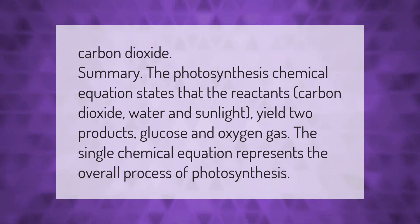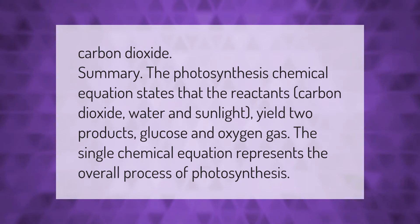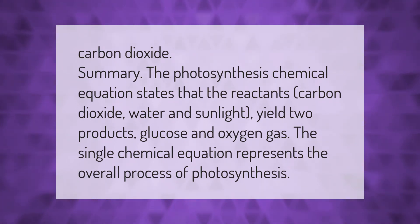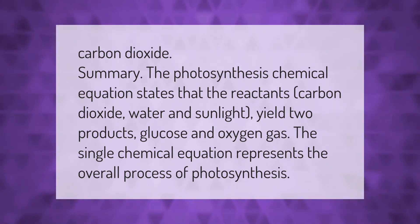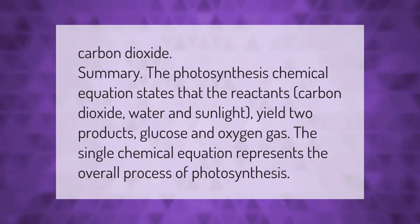The photosynthesis chemical equation states that the reactants carbon dioxide, water, and sunlight yield two products: glucose and oxygen gas. The single chemical equation represents the overall process of photosynthesis.